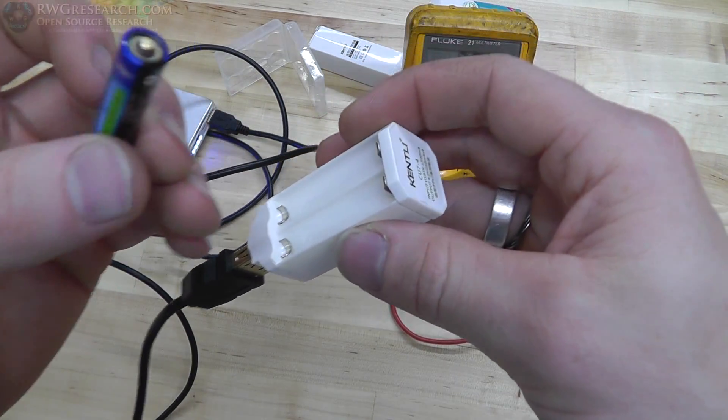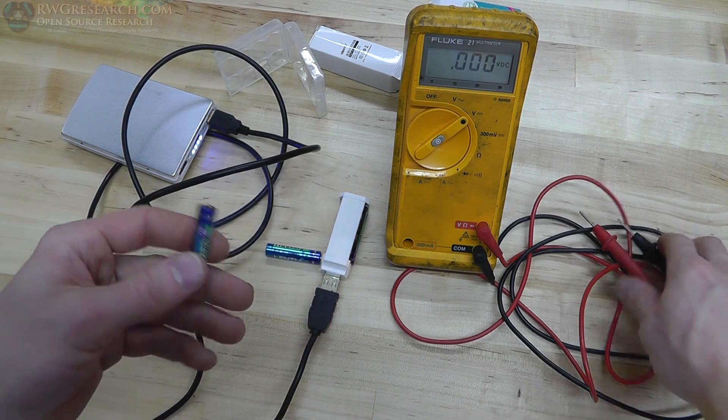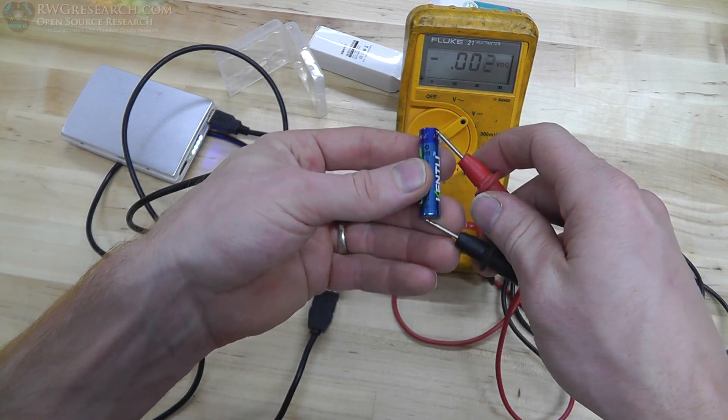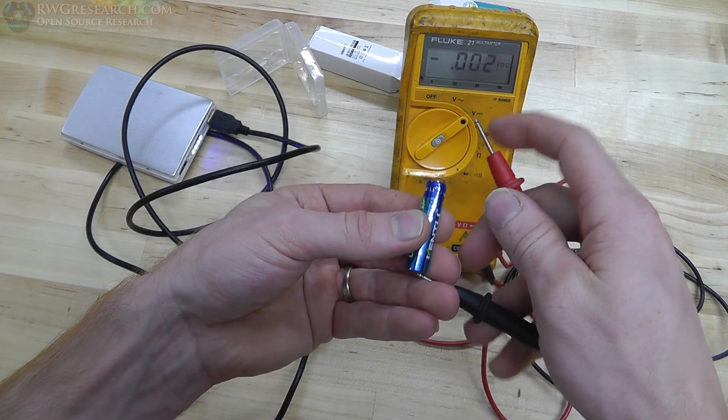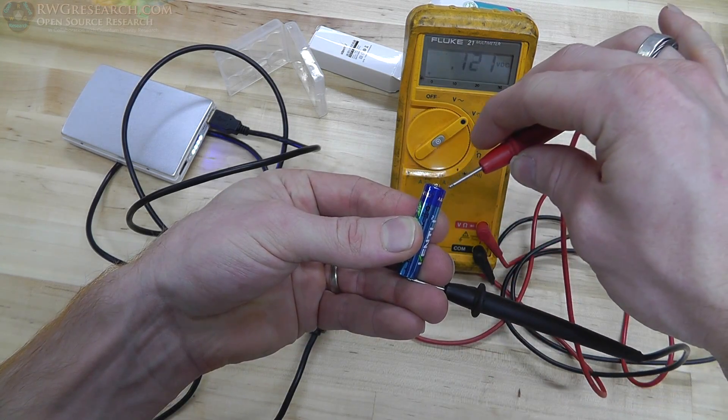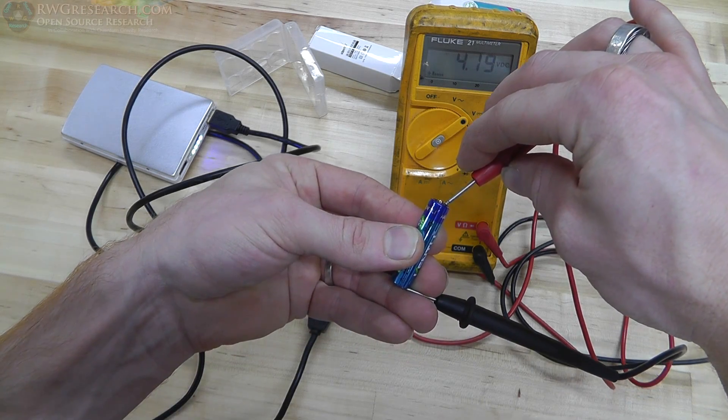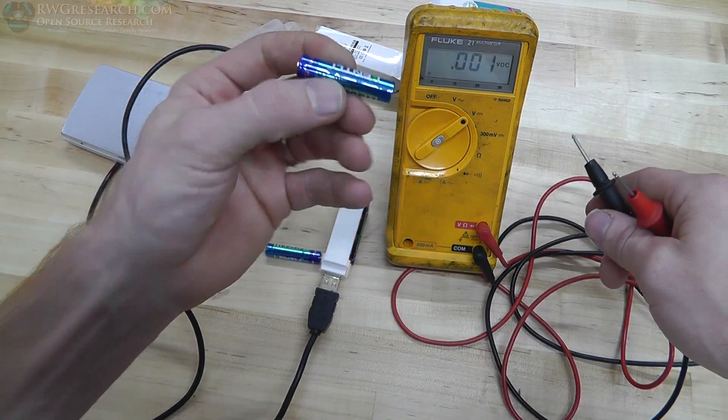So, yes indeed, these are actually 1.5 volt output batteries, but indeed, if we check the inner pin, we get our normal lithium ion battery. So that's how they're doing that.